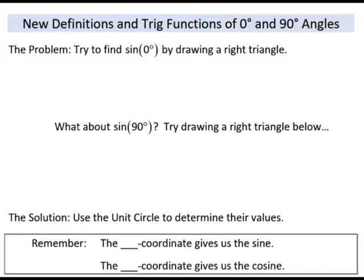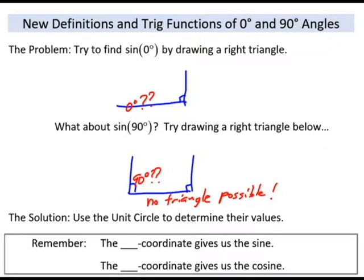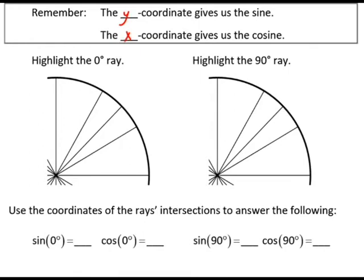The sine of theta will be the y-coordinate of where the theta ray intersects the unit circle. Cosine will be x. We can use this to break free of the constraints of acute triangles. We can find the sine of 0 degrees, even though there is no way to draw a triangle with a 0-degree angle. Similarly, the sine of 90 degrees cannot be found with the right triangle because we can't have more than one right angle. By redefining the sine and cosine in terms of the unit circle, we can look at coordinates instead of trying to build right triangles where it's impossible. Remember, the sine on the other page was given by the y-coordinate. And the cosine was given by x. Pause and try these.